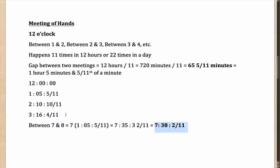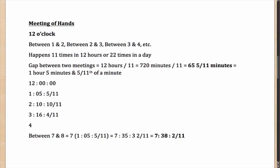Similarly, between 4 and 5 you use 4 times the interval. That gives 4:20 20/11. Since 20/11 = 1 and 9/11, the 1 carries over and the final answer is 4:21 and 9/11. This concept is very handy and useful for fast calculations.